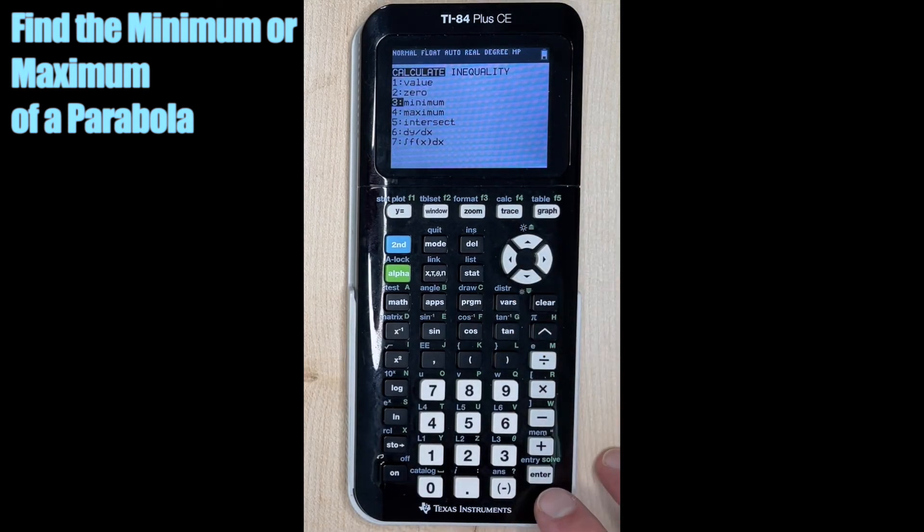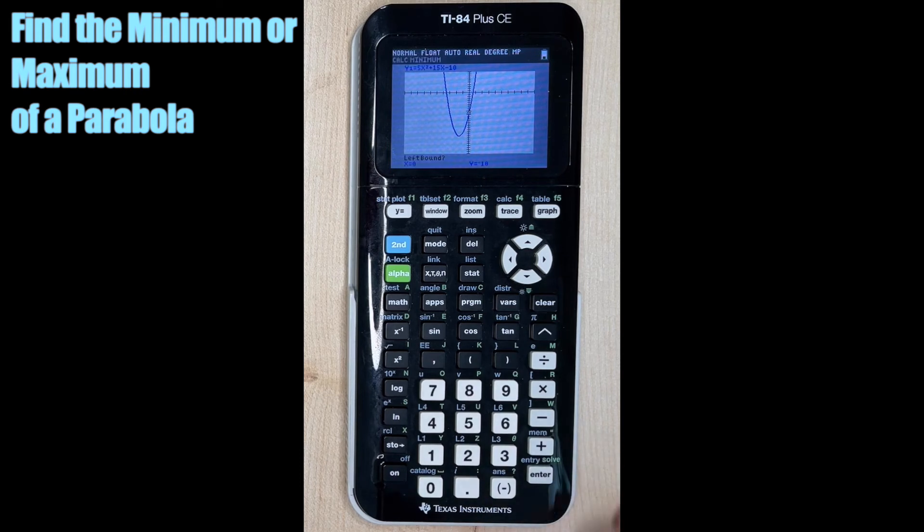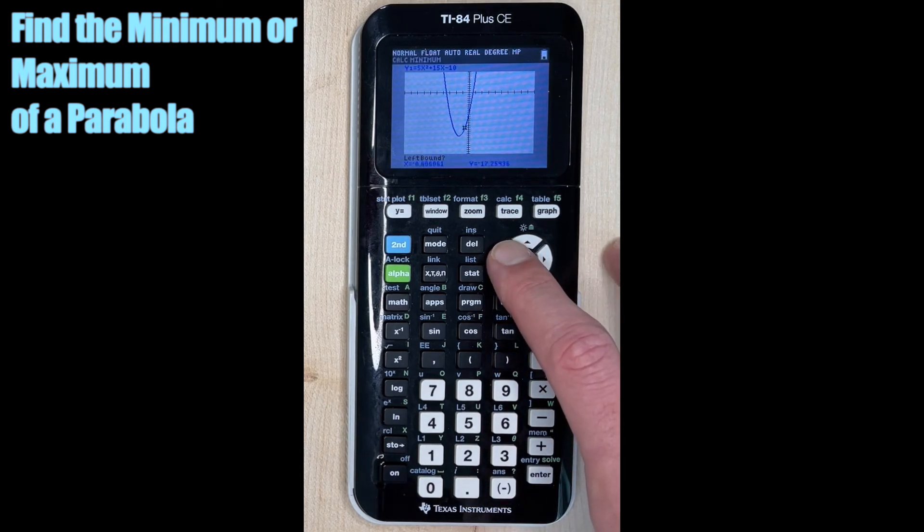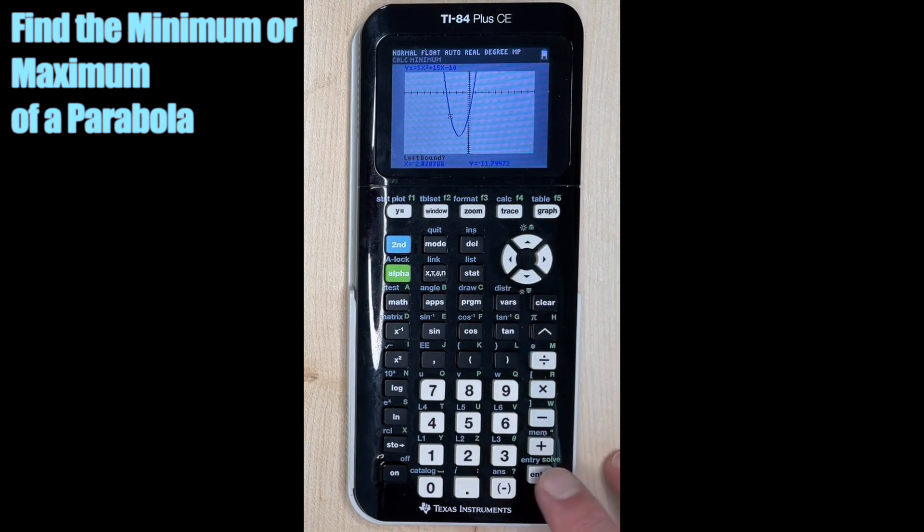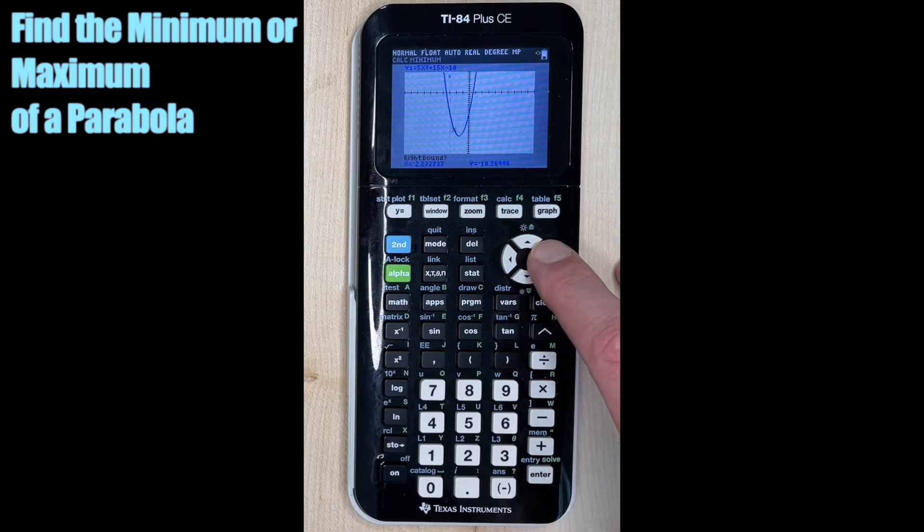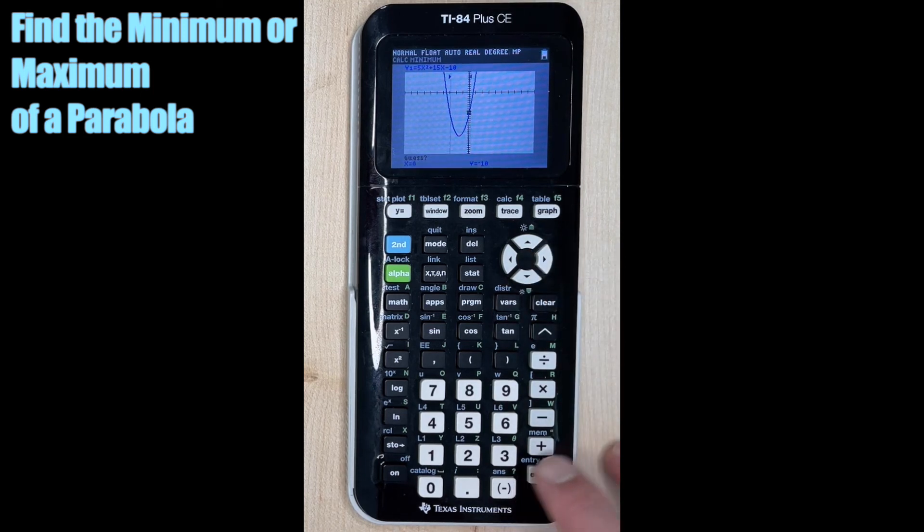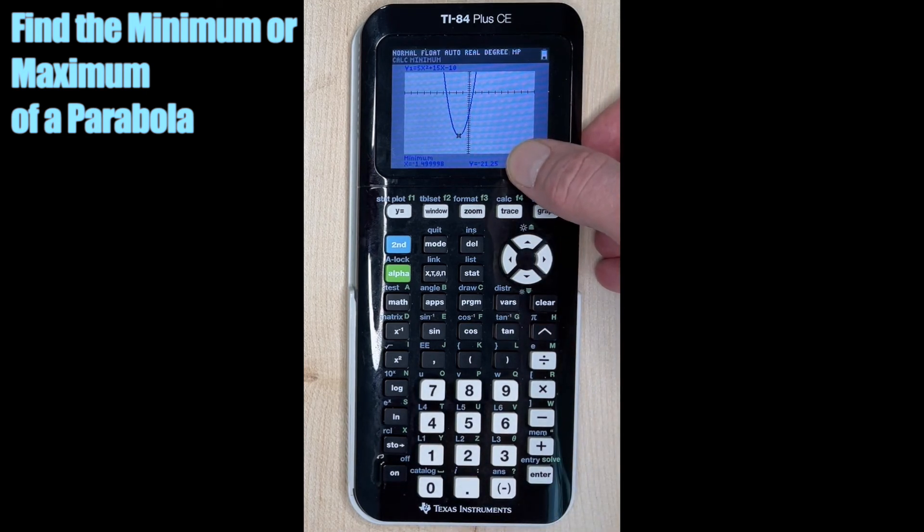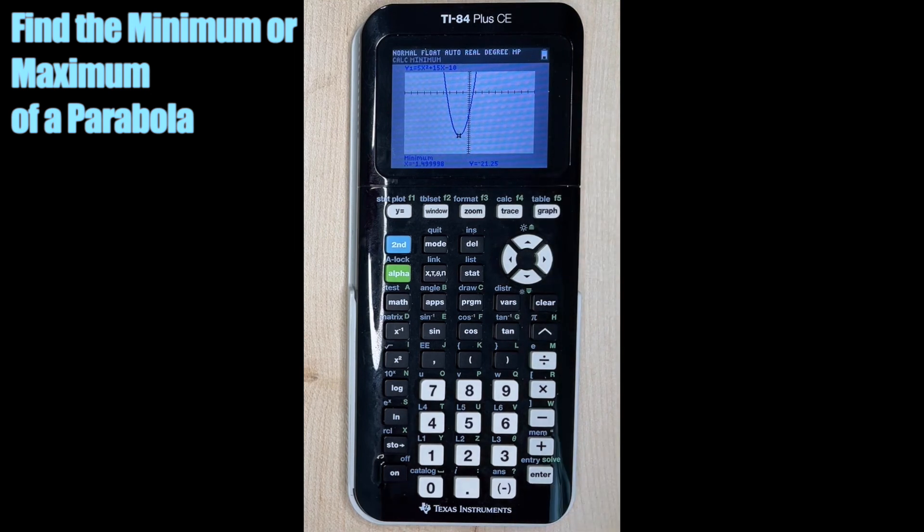Now we're going to move our cursor to the left side of the vertex, hit enter, move it to the right side of the vertex, hit enter again. And last time we hit enter to give us what our minimum is. So remember the minimum is the y value. So here our minimum is negative 21.25. And that's how you find the maximum or the minimum of a parabola on the TI-84 Plus CE graphing calculator.